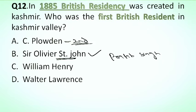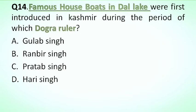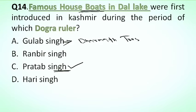Next question is: beggar or forced porter labor in all its forms was abolished by which Dogra ruler? Options: A. Gulab Singh, B. Rambir Singh, C. Pratap Singh, D. Hari Singh. The correct answer is Pratap Singh. Pratap Singh abolished the beggar or forced porter labor in all its forms. Next: the famous houseboats in Dal Lake were first introduced in Kashmir during the period of which Dogra ruler? The correct answer is option C, Pratap Singh, who introduced houseboats in Kashmir Valley. Gulab Singh introduced the Dharma Trust, and Rambir Singh introduced the telegraph in Kashmir Valley.